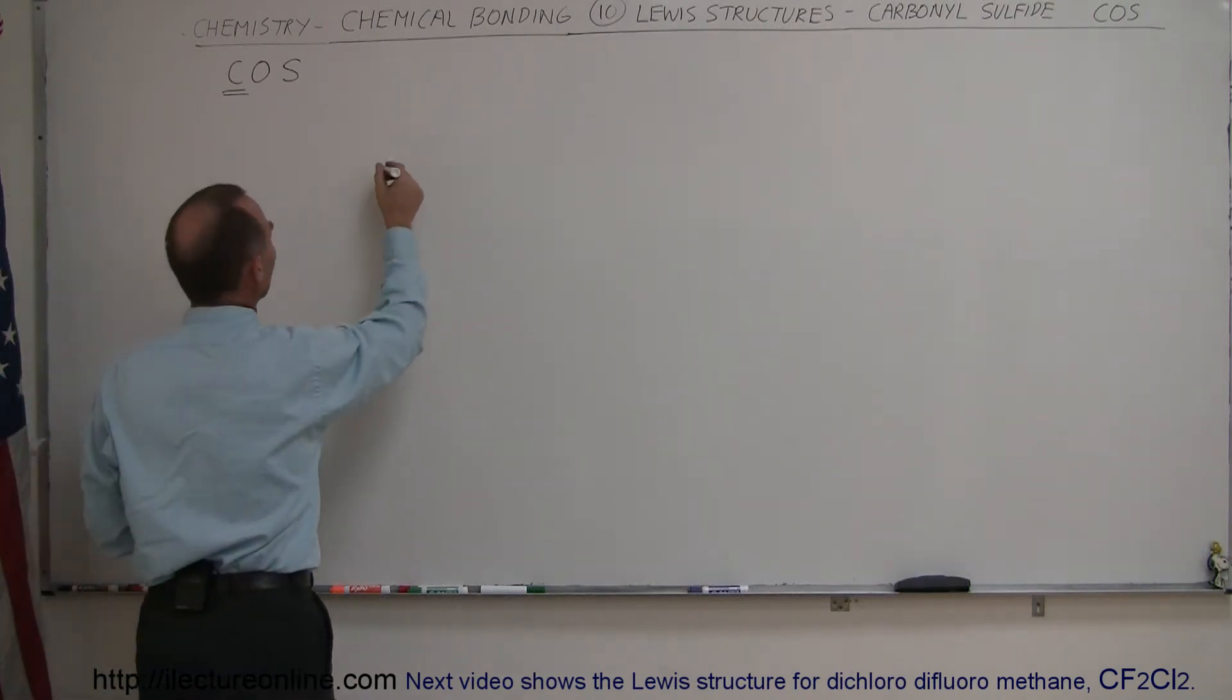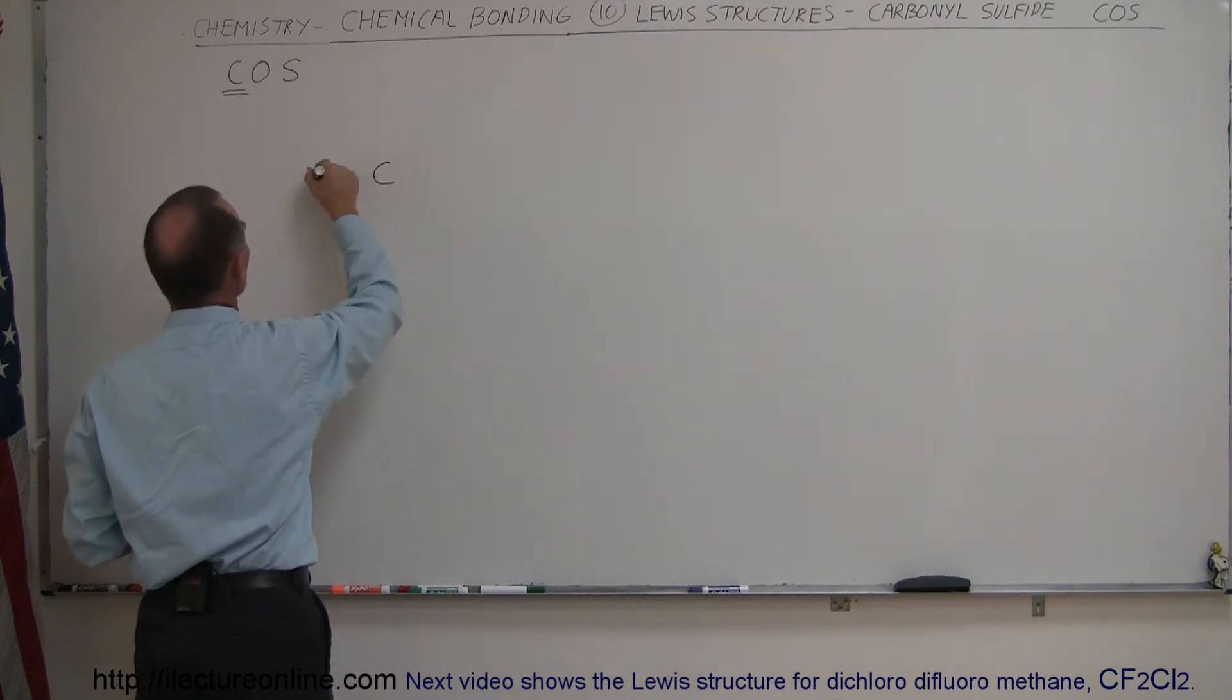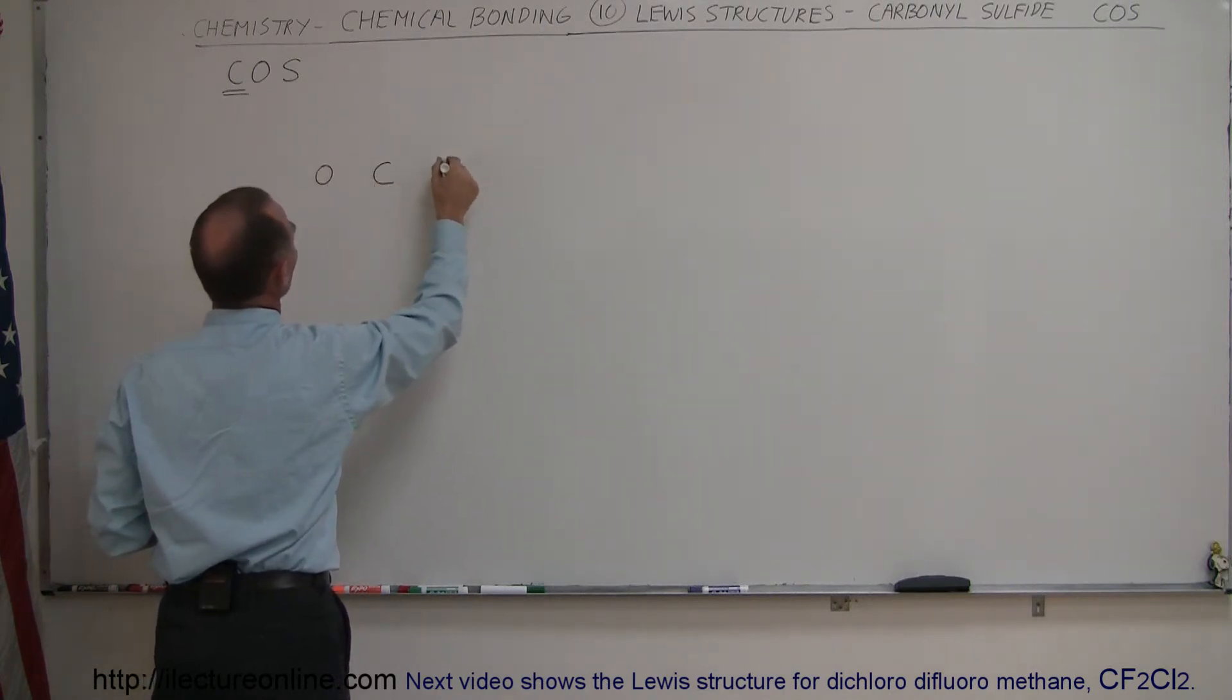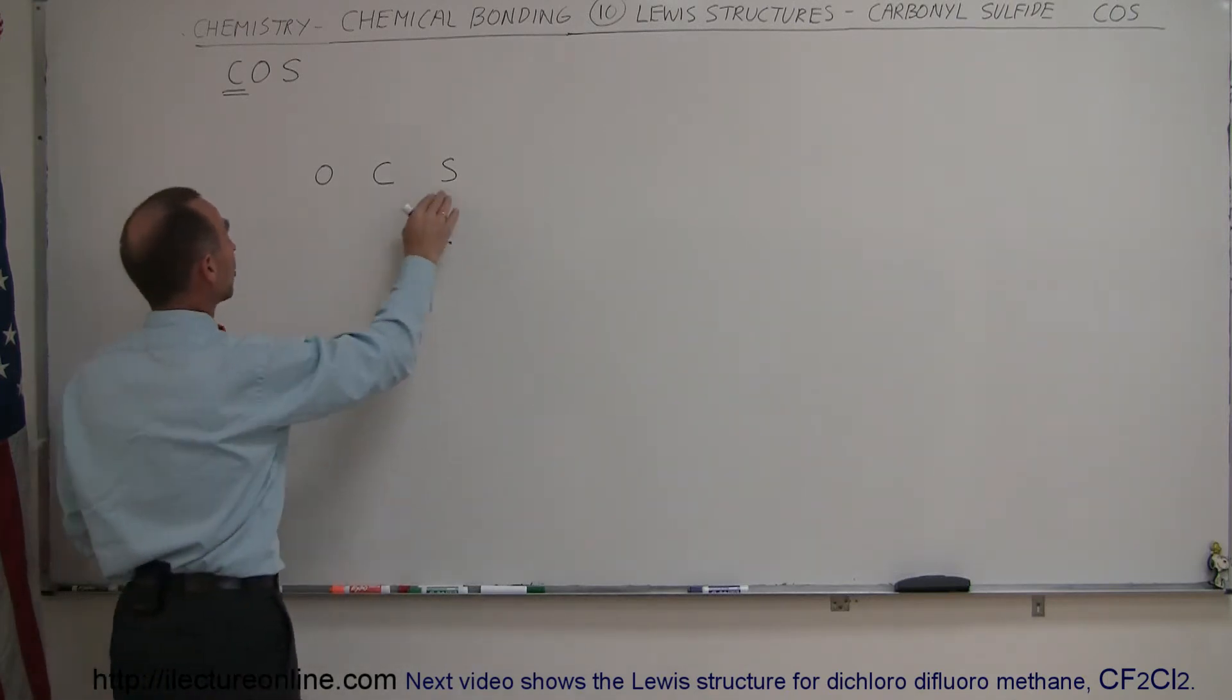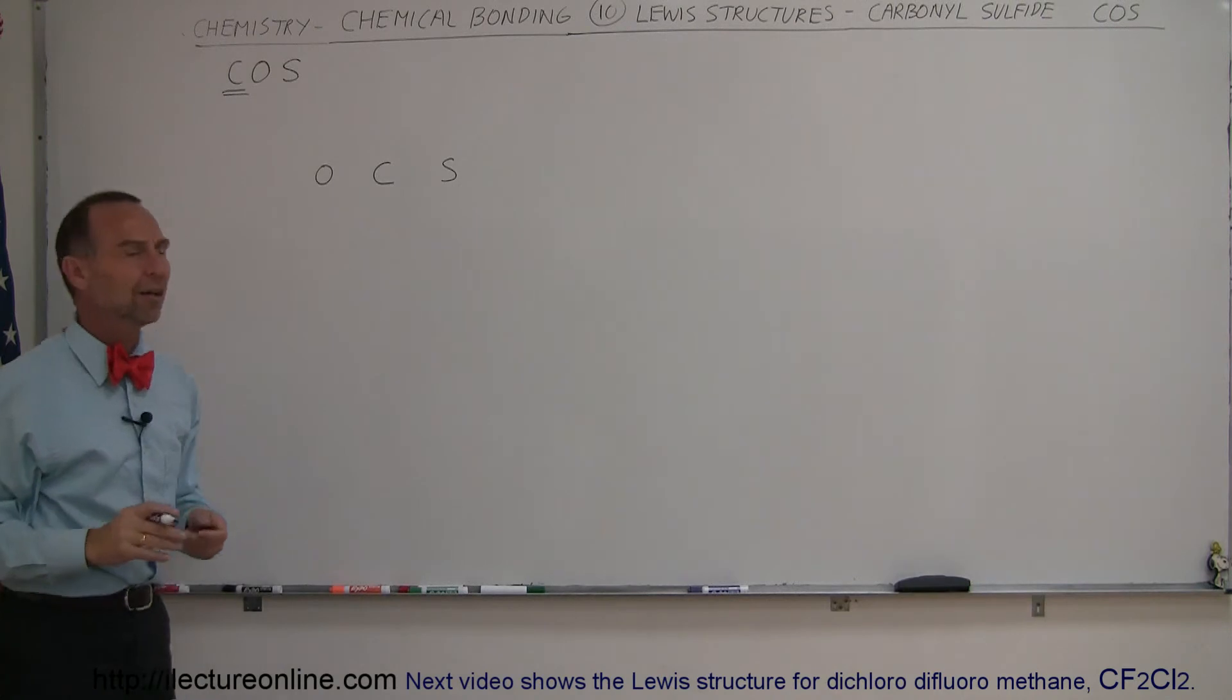So I'm going to assume that we have carbon in the middle, and that we have oxygen and sulfur on the sides. We could put oxygen on one side and sulfur on the other side. Obviously, we could have put sulfur here and oxygen there. It would not have made any difference.